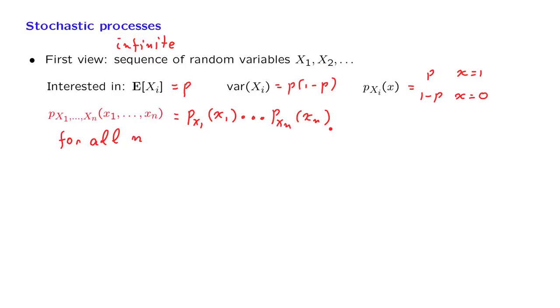Now there is a second view of a stochastic process. It's not just a collection of random variables, but a collection that's indexed by an index that keeps increasing. And quite often, we think of this index as corresponding to time. So we have a mental picture that involves a process that keeps evolving in time.